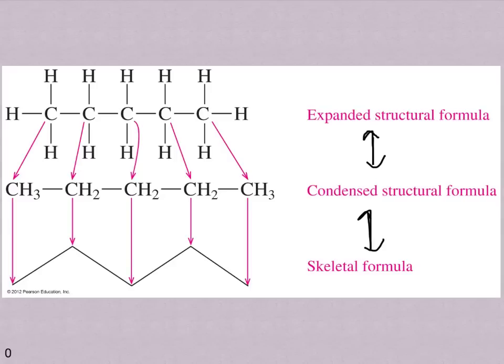The first one is called an expanded structural formula, or we also call these Lewis structures. This is similar to what we looked at in the previous chapter in drawing out all of the atoms and showing the bonds between them. We can also draw a condensed structural formula, which is handy because as you can see this is a pretty small molecule, but organic molecules get very big, so being able to write a condensed structure makes it a little bit easier.